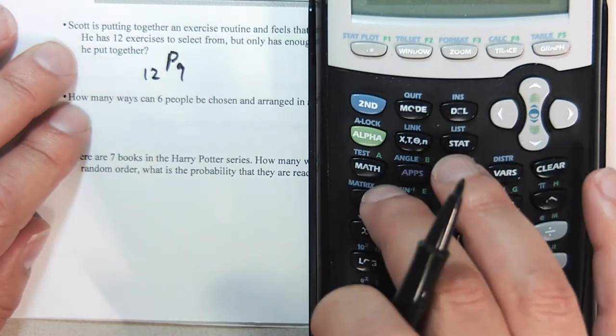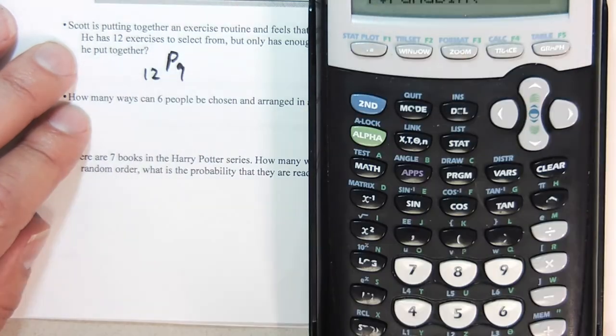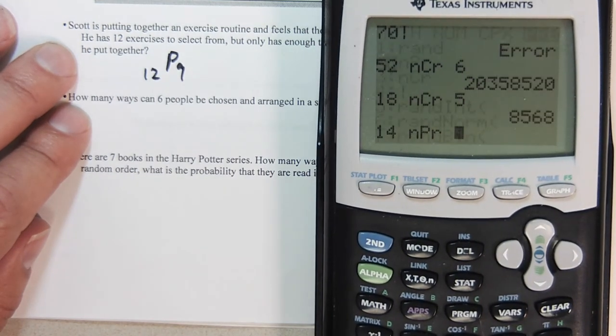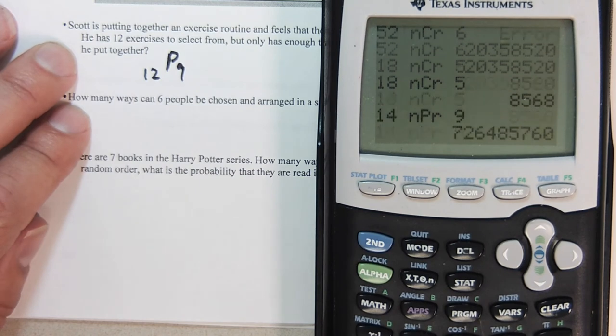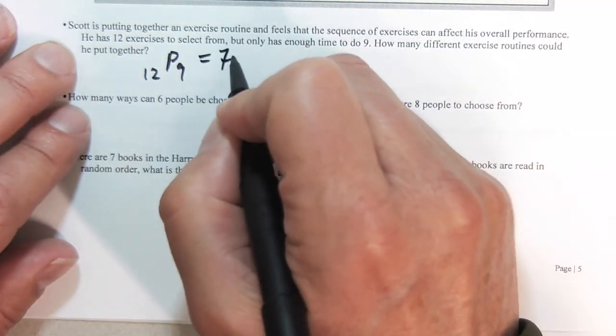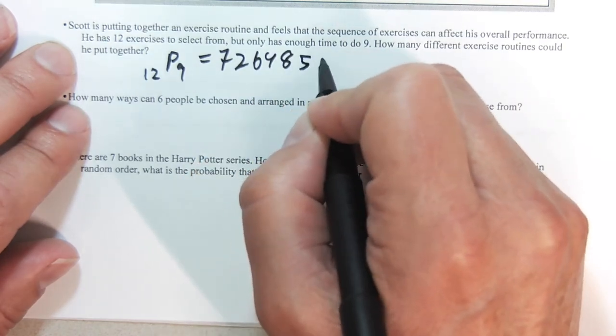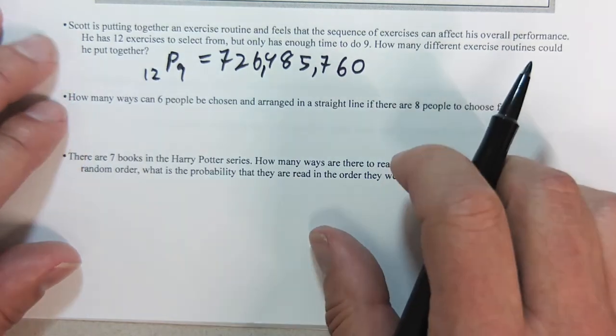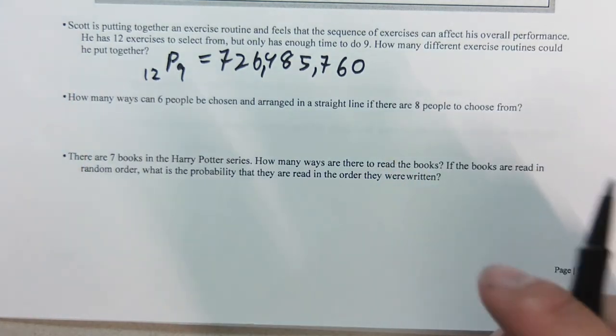So this is going to be 12 permutation 9. If I remember right, this is quite a large number. 12, now permutation, that's number two here, in the same place that we've been doing, 9. So that's 79,833,600. Let's see what that looks like as a number. 79 million routines.